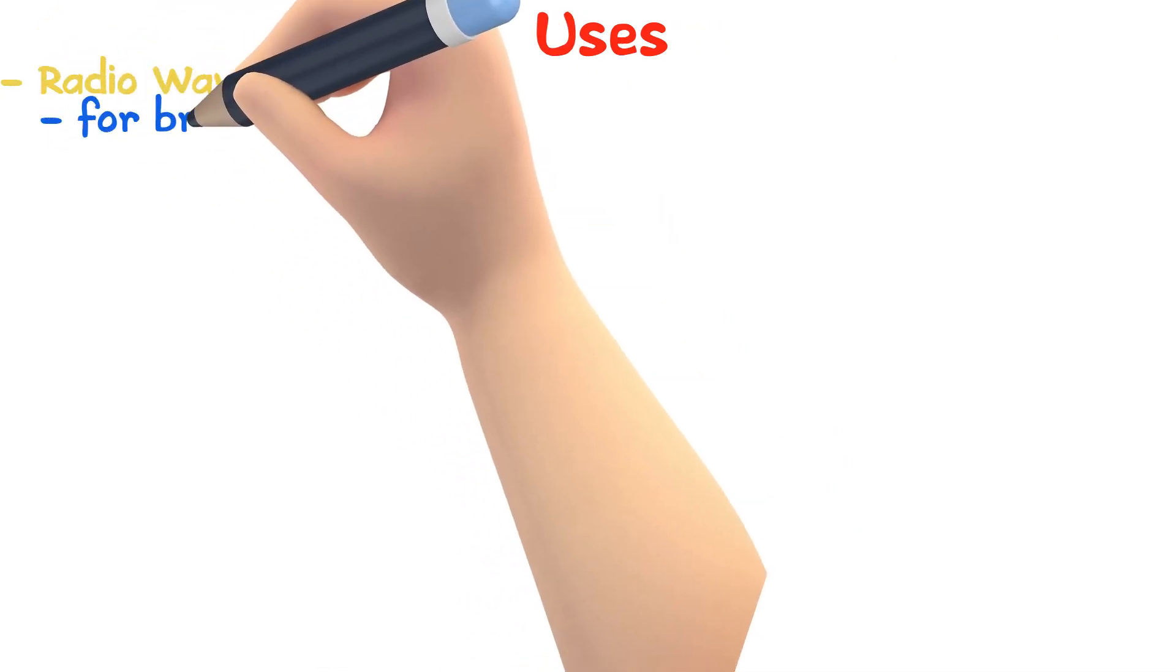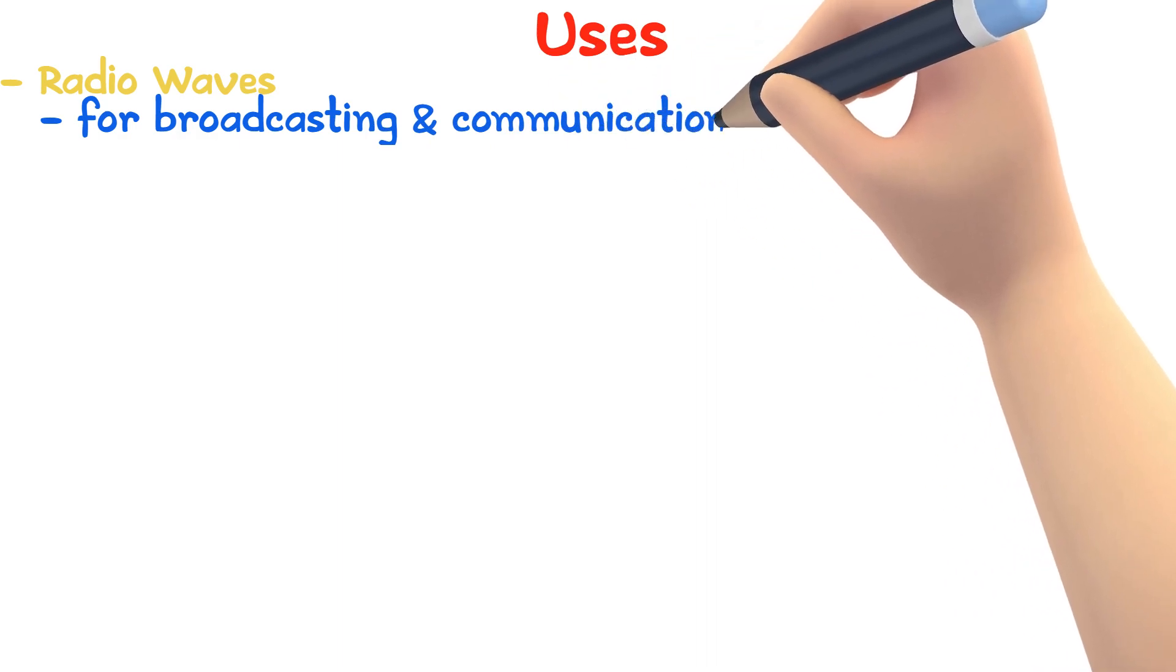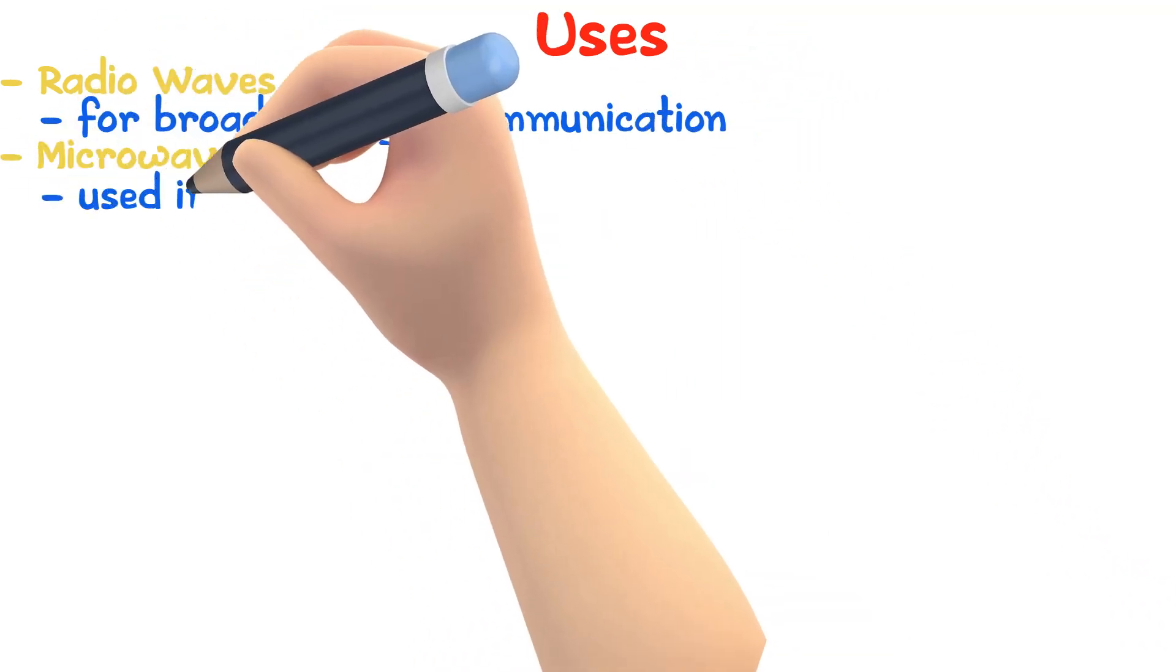Now let's look at the uses of the waves in the electromagnetic spectrum. Radio waves are used for broadcasting and communications. Microwaves are used in mobile phones and cooking.